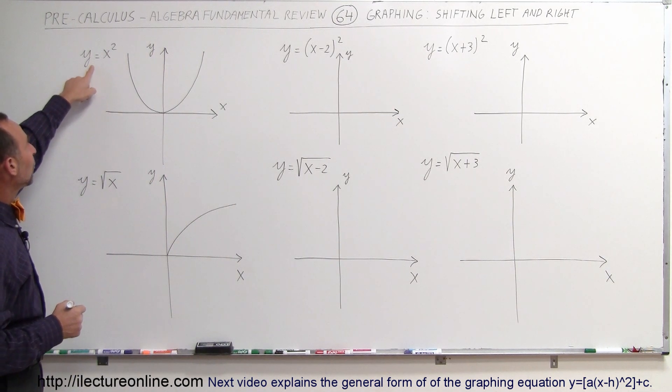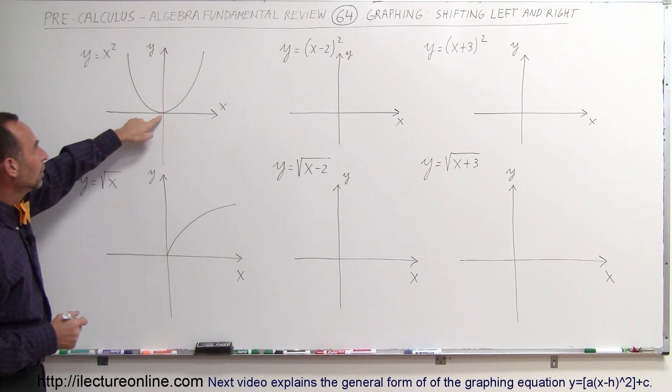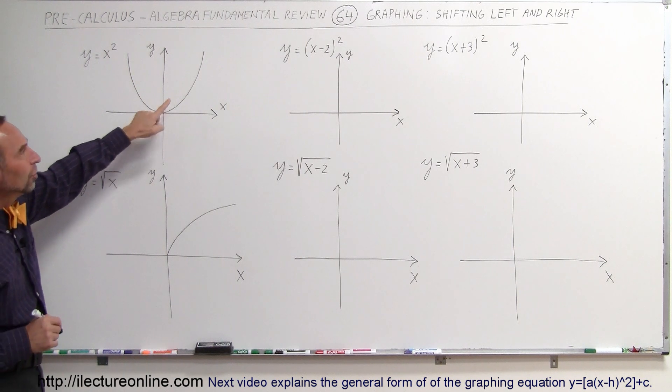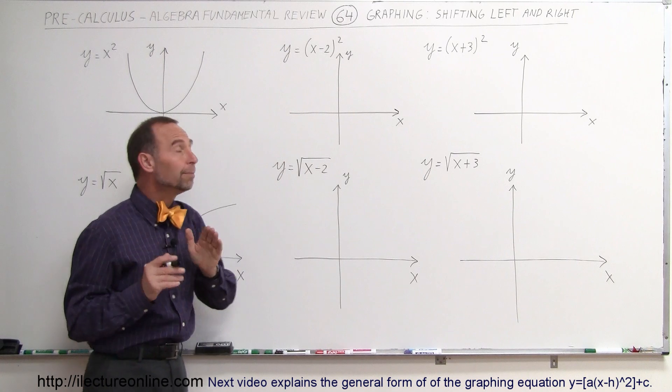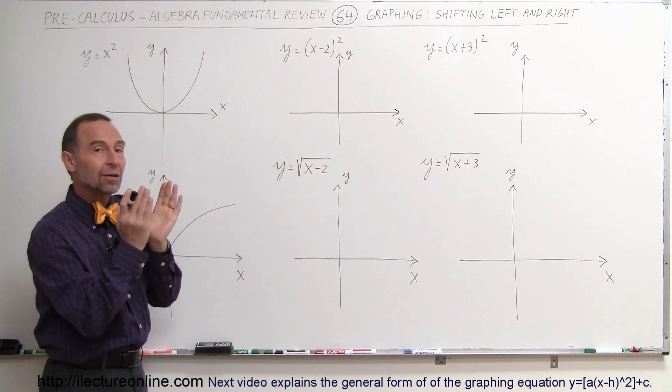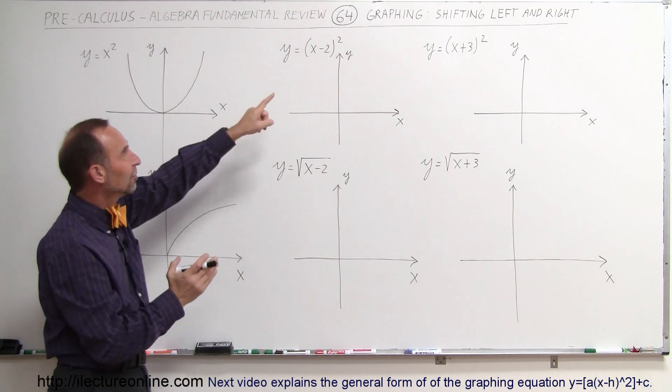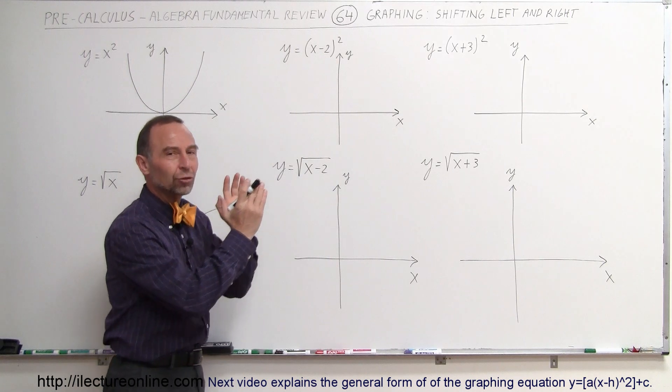So what happens is here we have y equals x squared, a simple parabola, the vertex is right here at the origin, but now we write y equals the quantity x minus 2 quantity squared, and that means that the parabola is going to be shifted. If it's a minus here, it's going to be shifted to the right.